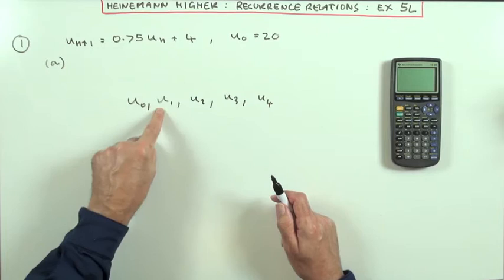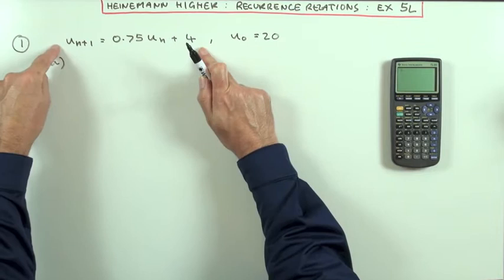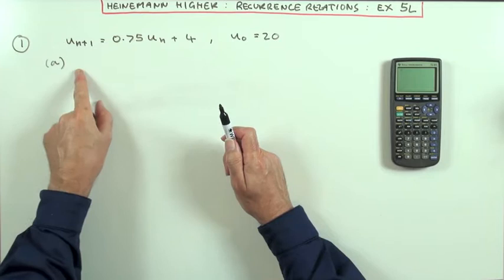But quite often, especially when it's a time sequence, you could have U₀ signifying the initial value and then U₁ becomes the first one after the first interval of time has been applied. All that matters is that you're looking for consecutive ones. This relationship here just tells you, from any given term, how to find the next one.